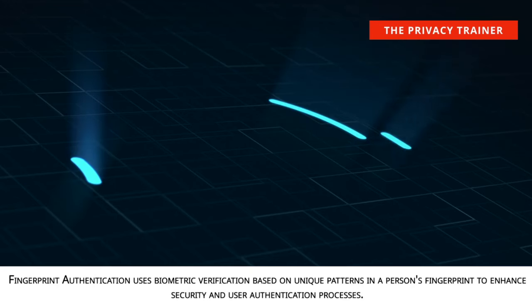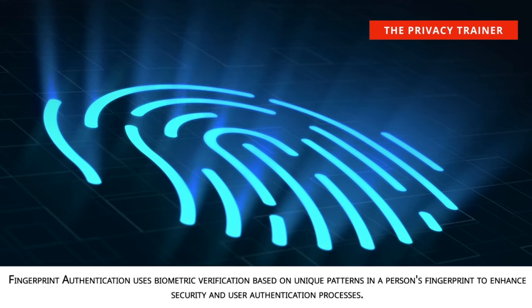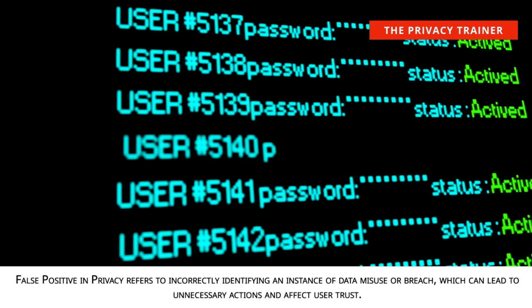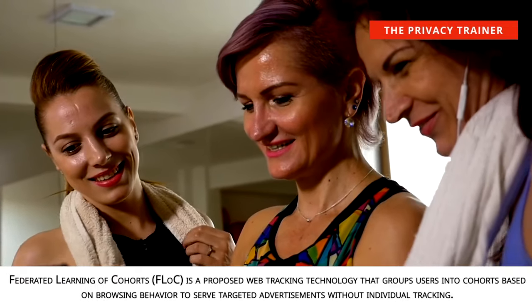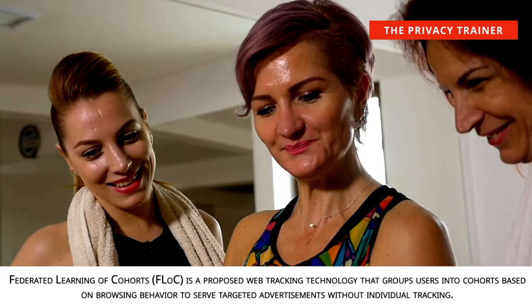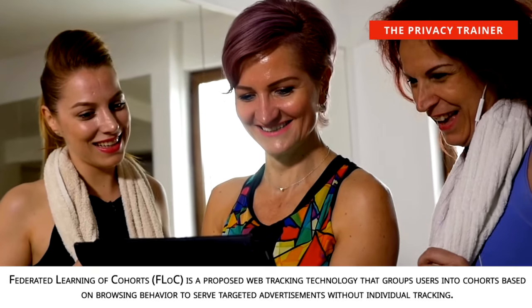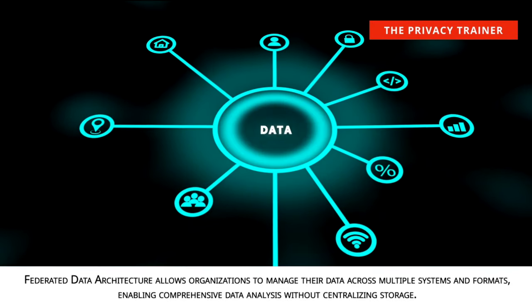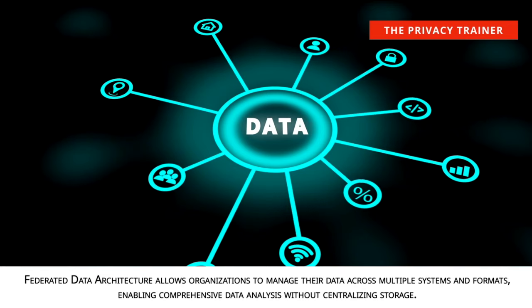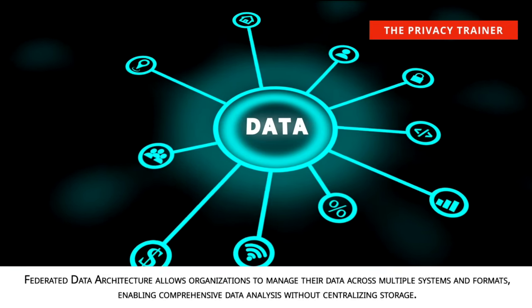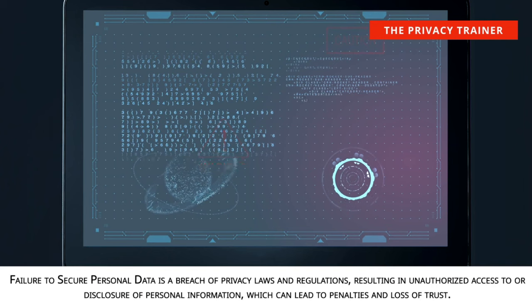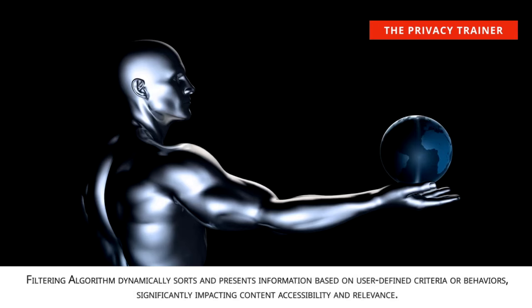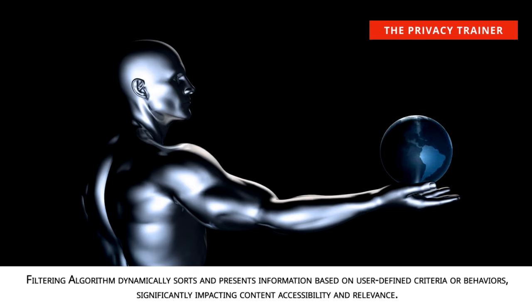Fingerprint authentication. Uses biometric verification based on unique patterns in a person's fingerprint to enhance security and authentication processes. False positive in privacy. Refers to incorrectly identifying an instance of data misuse or breach, which can lead to unnecessary actions and affect user trust. Federated Learning of Cohorts, FLOC. A proposed web tracking technology that groups users into cohorts based on browsing behavior to serve targeted advertisements without individual tracking. Federated Data Architecture. Allows organizations to manage their data across multiple systems and formats, enabling comprehensive data analysis without centralizing storage. Failure to secure personal data. A breach of privacy laws and regulations, resulting in unauthorized access to or disclosure of personal information, which can lead to penalties and loss of trust. Filtering algorithm. Dynamically sorts and presents information based on user-defined criteria or behaviors, significantly impacting content accessibility and relevance.